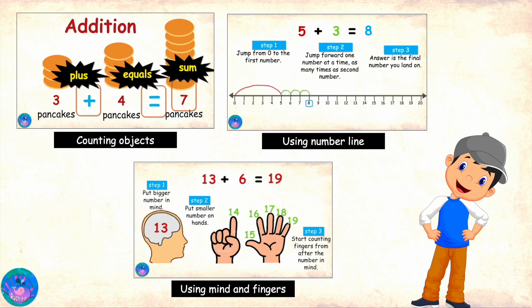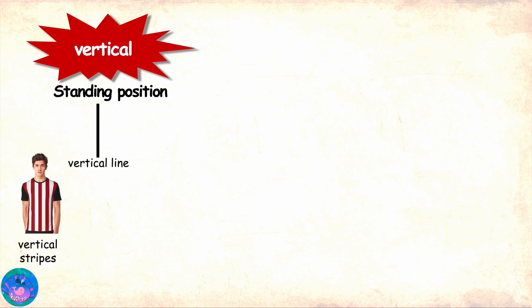And today we will be learning vertical addition. Vertical means standing position. For example, this is a vertical line. This boy is wearing a t-shirt with vertical stripes. This phone and this ladder are in vertical position.